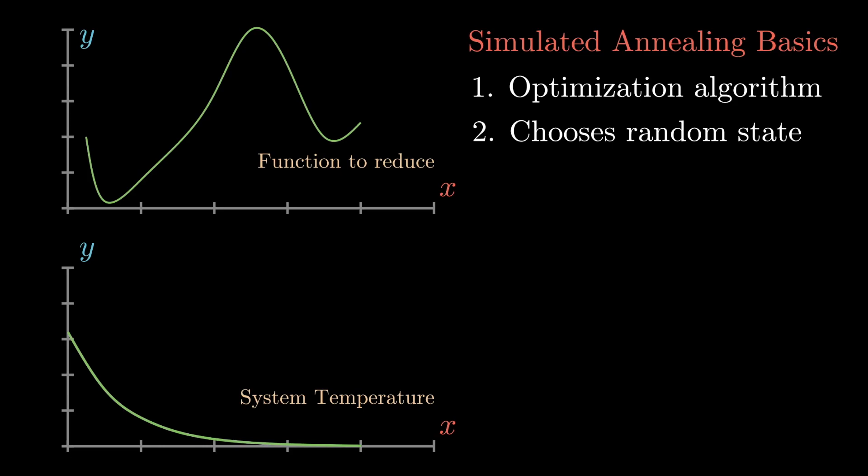And then it chooses a new one and it accepts this new state with a probability that's given below with the formula. And in this formula, delta is the cost of the second state minus the cost of the first state. So if the second state has a lower cost than the first one, then the probability of this state being accepted is almost always one.